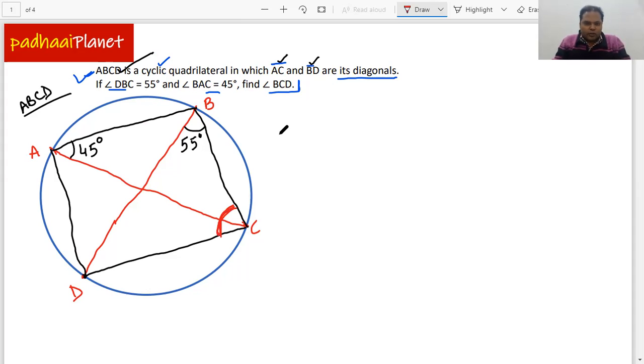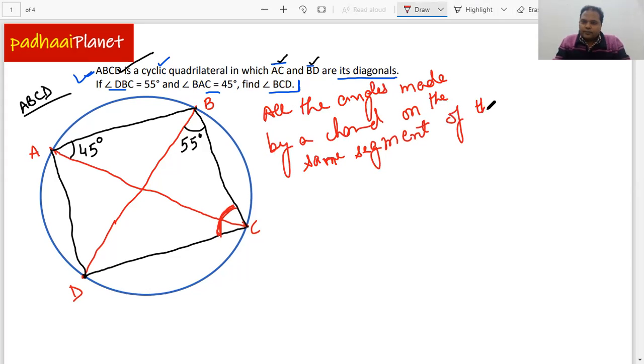Now we are going to use a theorem here which is already used a lot in the previous videos and the previous questions which you must have seen and that says that any chord makes equal angles. Or rather I would say all the angles made by a chord on the same segment, on the same segment of the circle, same segment of the circle are equal. Right.